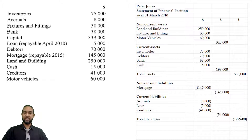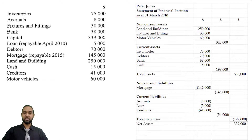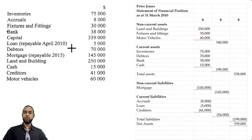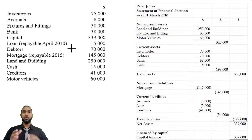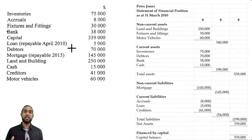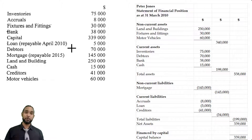Total assets minus total liabilities gives us net assets, otherwise known as capital, because capital equals assets minus liabilities. Adding the $54,000 current liabilities to the $145,000 non-current gives $199,000 total liabilities. The capital figure given in the list of balances is $339,000. There is more than one way to present a balance sheet even in order of permanence — I prefer the net assets approach, but you can also do assets equal to capital plus liabilities.